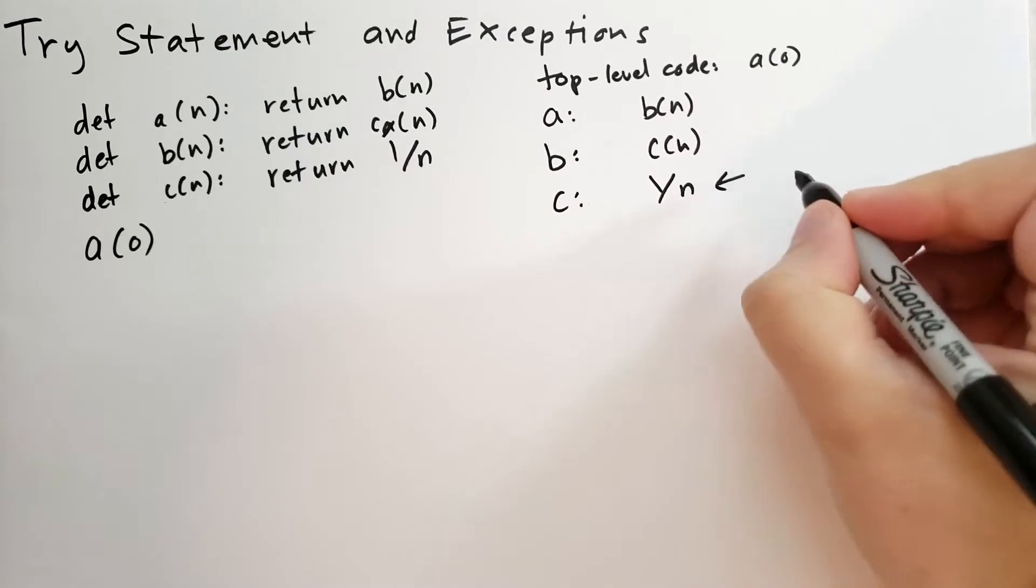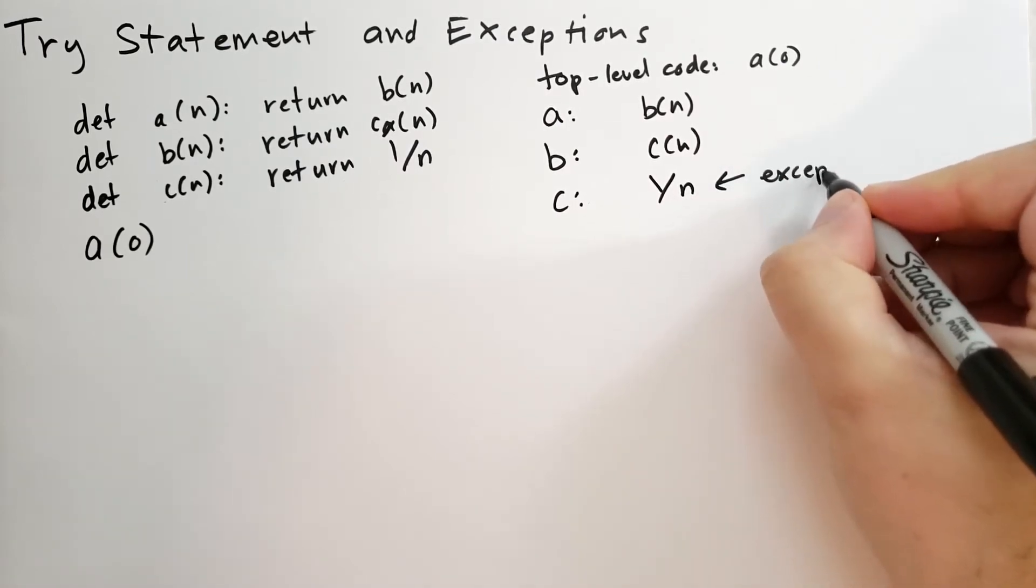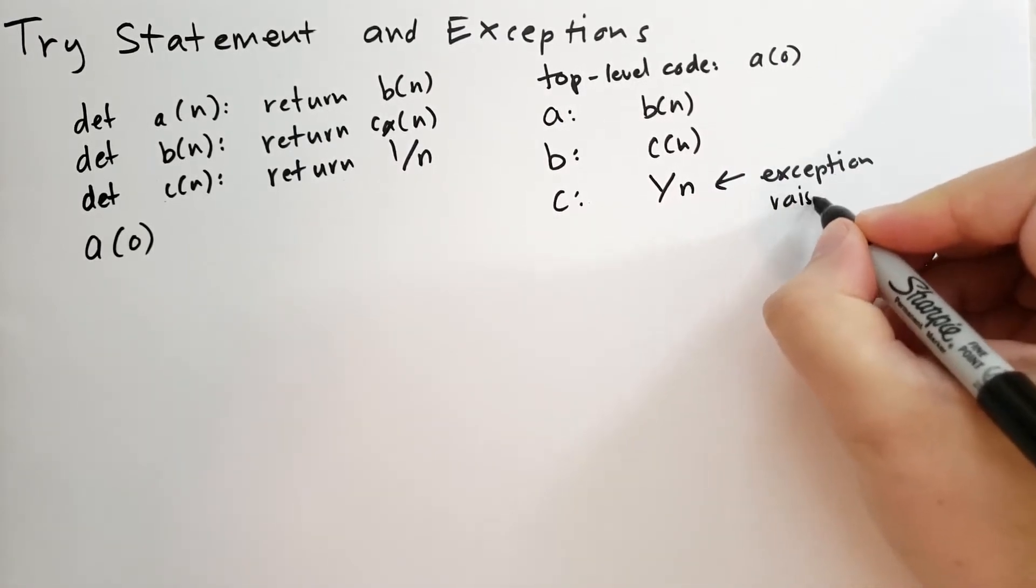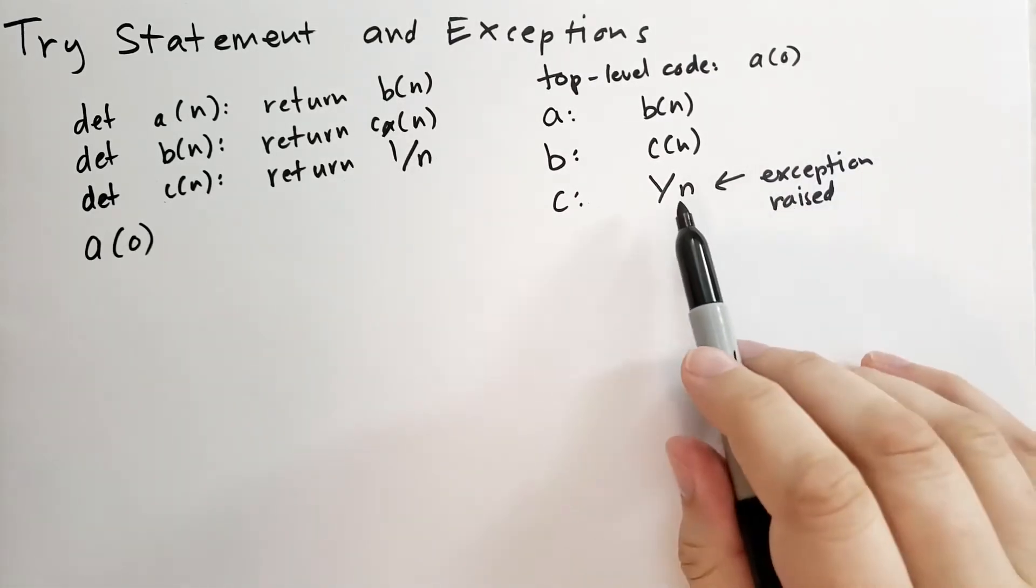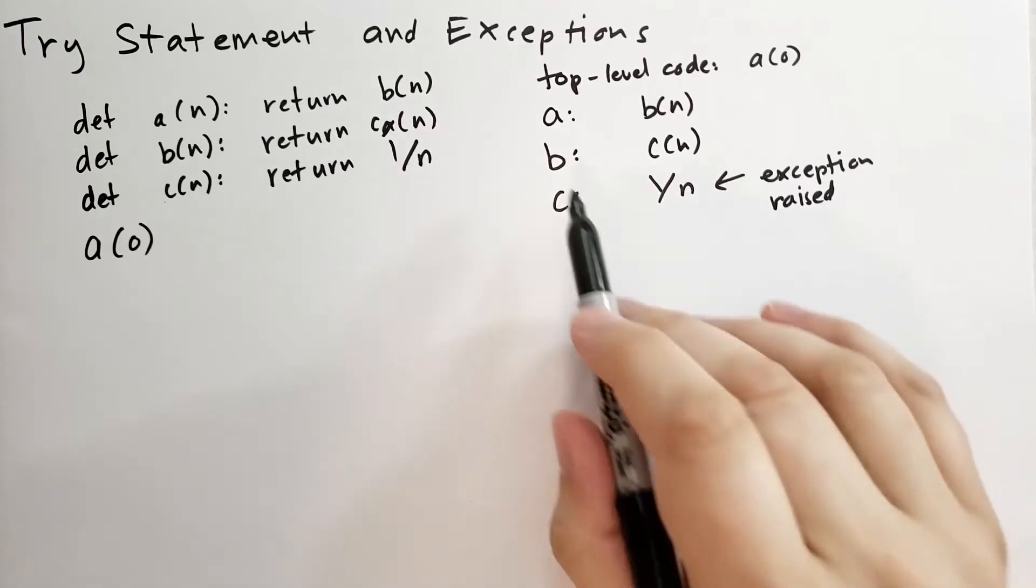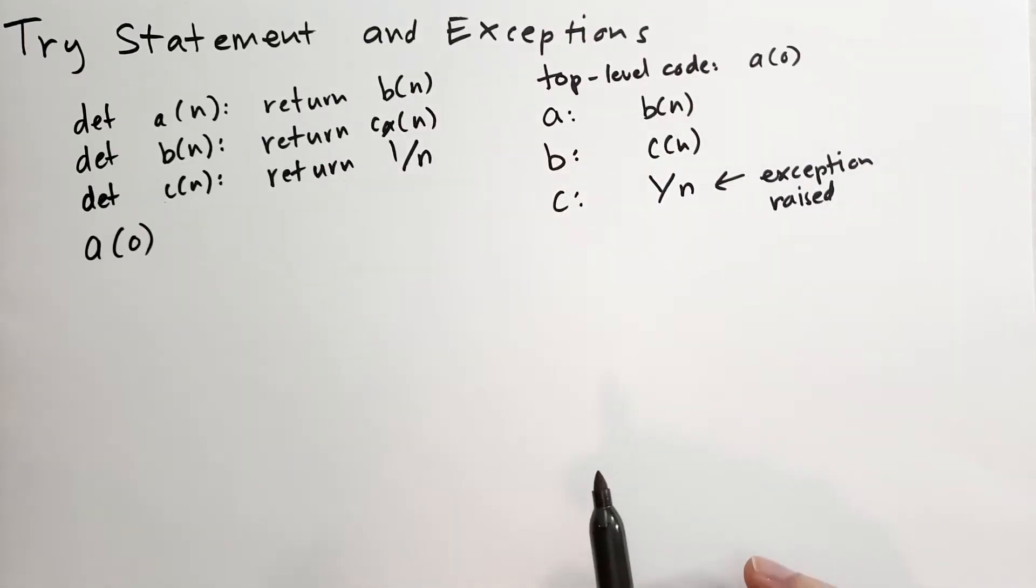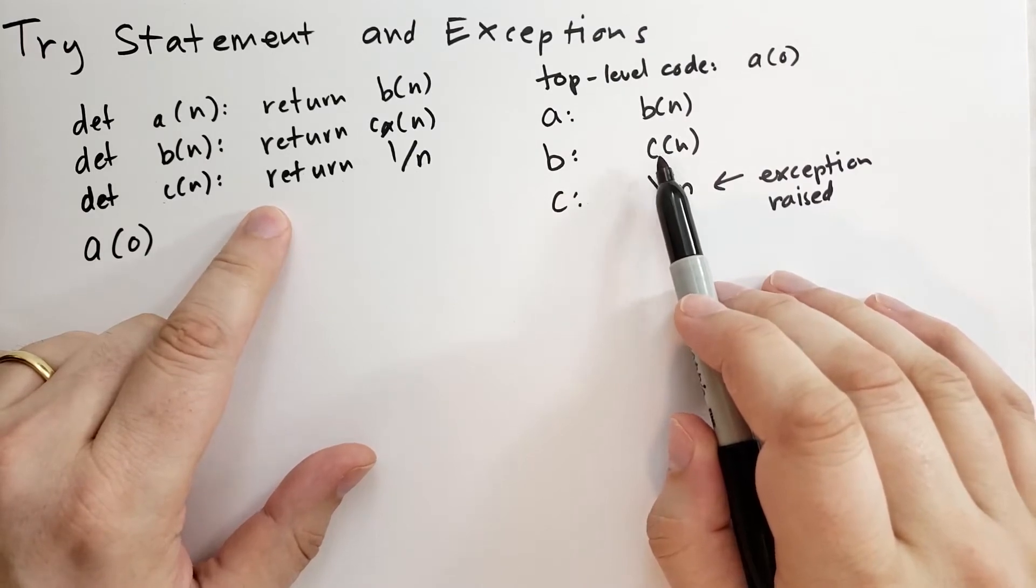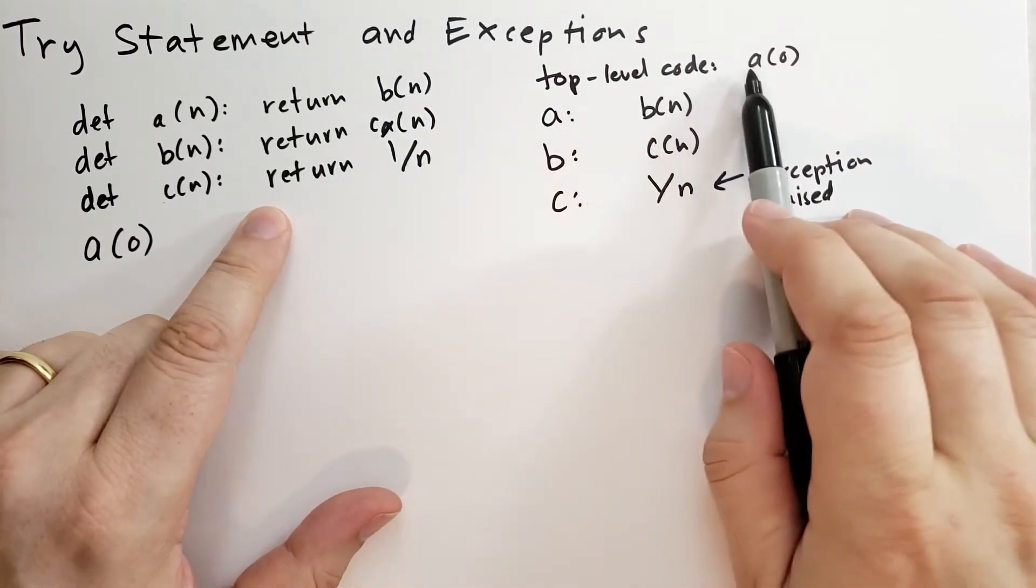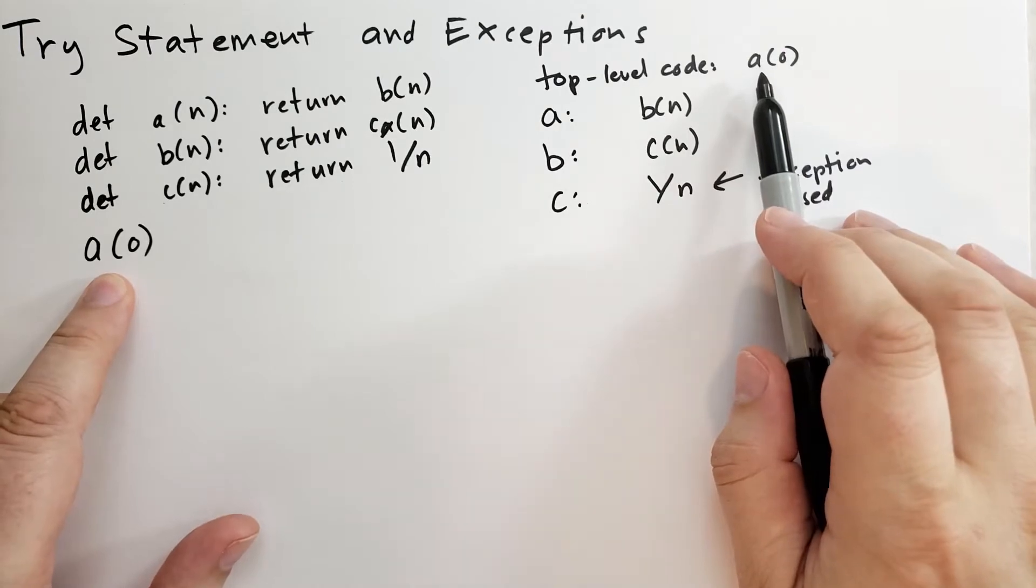And then c is trying to return 1 divided by n. And this is where the exception is raised. By raised, we mean the exception travels up the call stack until some code can catch and handle that exception. In this case, there's no try blocks, there's no except blocks.